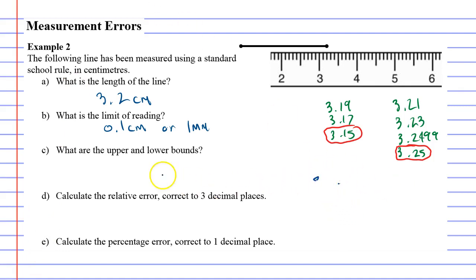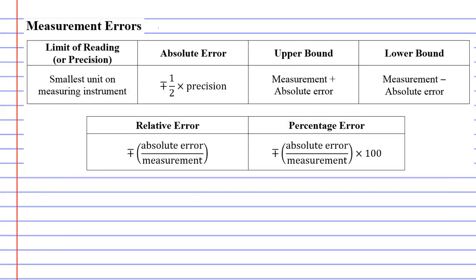Alright, so the lower bound equals 3.15 centimeters and the upper bound is 3.25 centimeters. And what we'll do is we'll just look back at the original equations we spoke about.